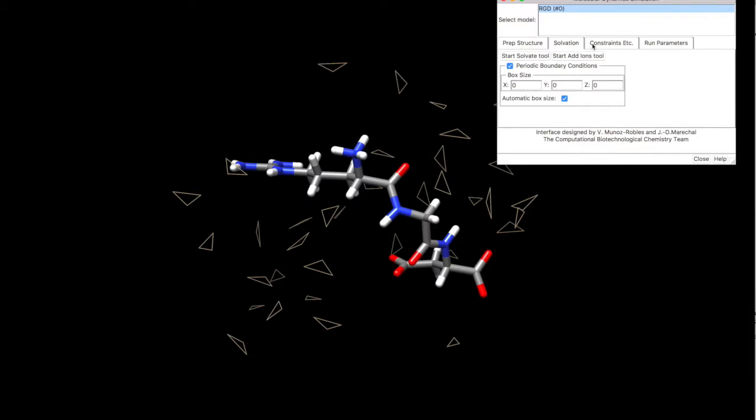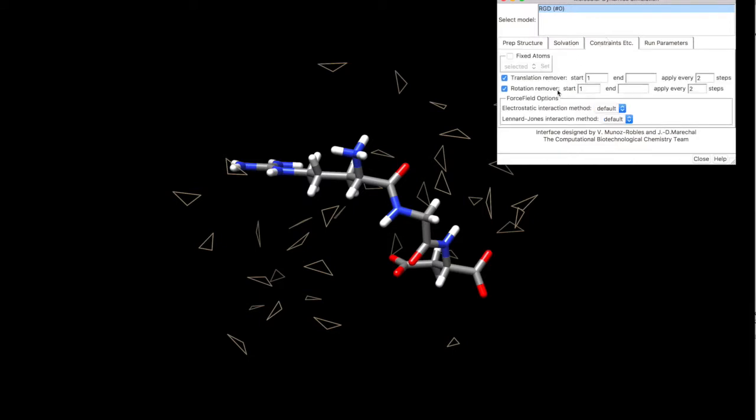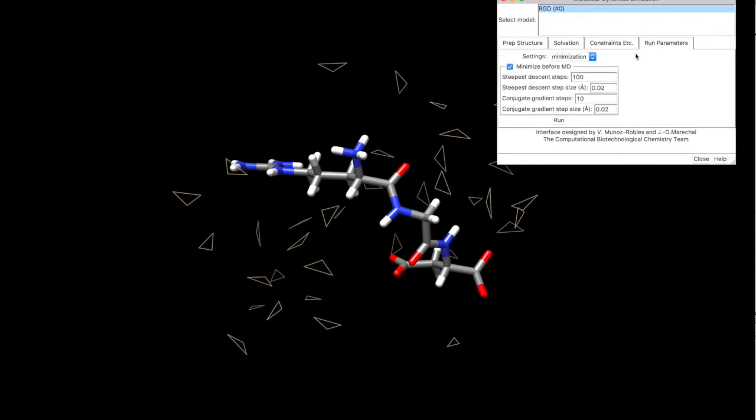And we are ready to put some constraints if needed, but for this purpose right now, we are not going to constrain any atoms, we can put that here. We are going to leave the electrostatic interaction and Leonard-Jones interaction methods by default. In the running parameters, we say that we want to do thousands of steps for the minimization here, for this method, and thousands of steps for this method.